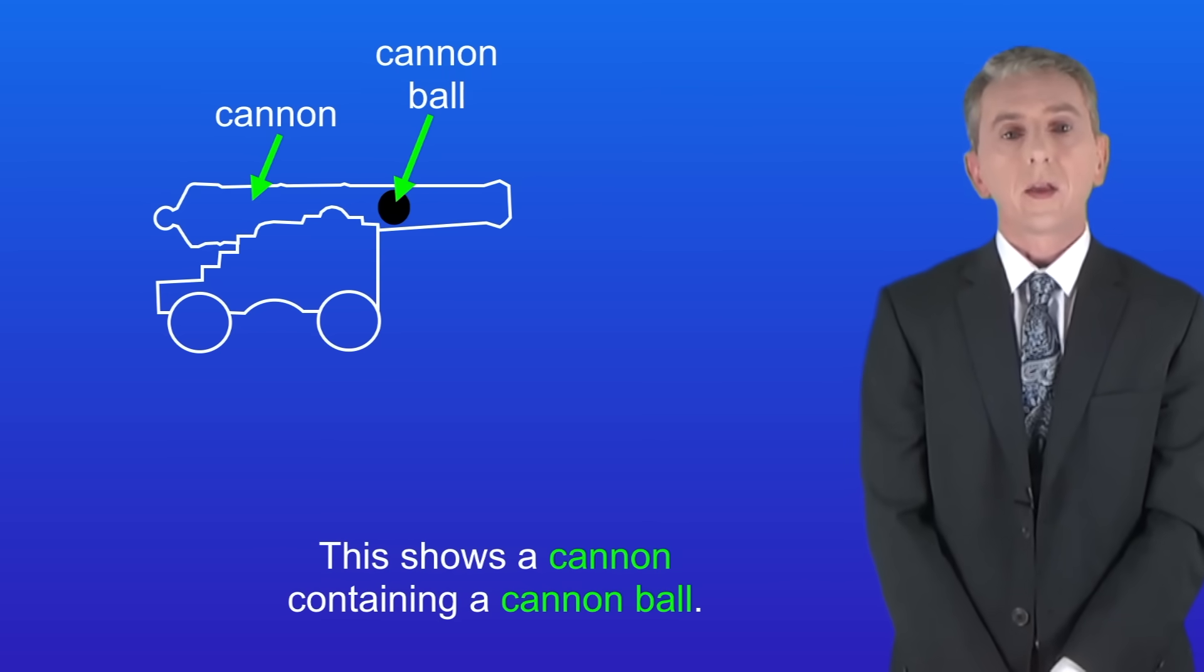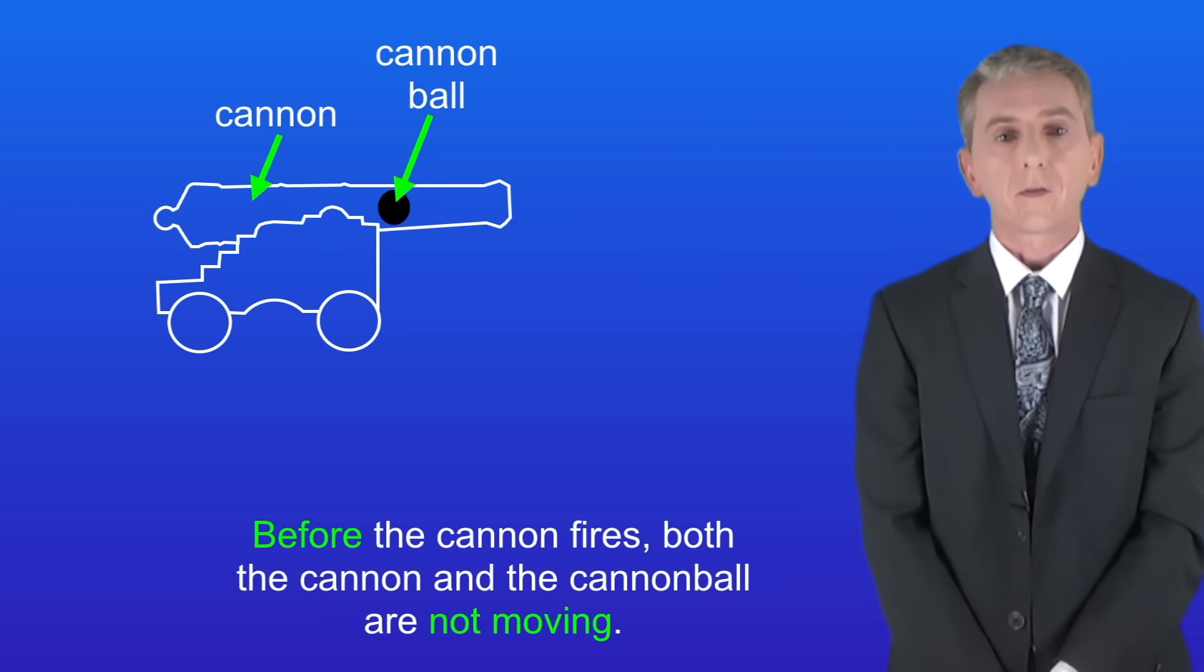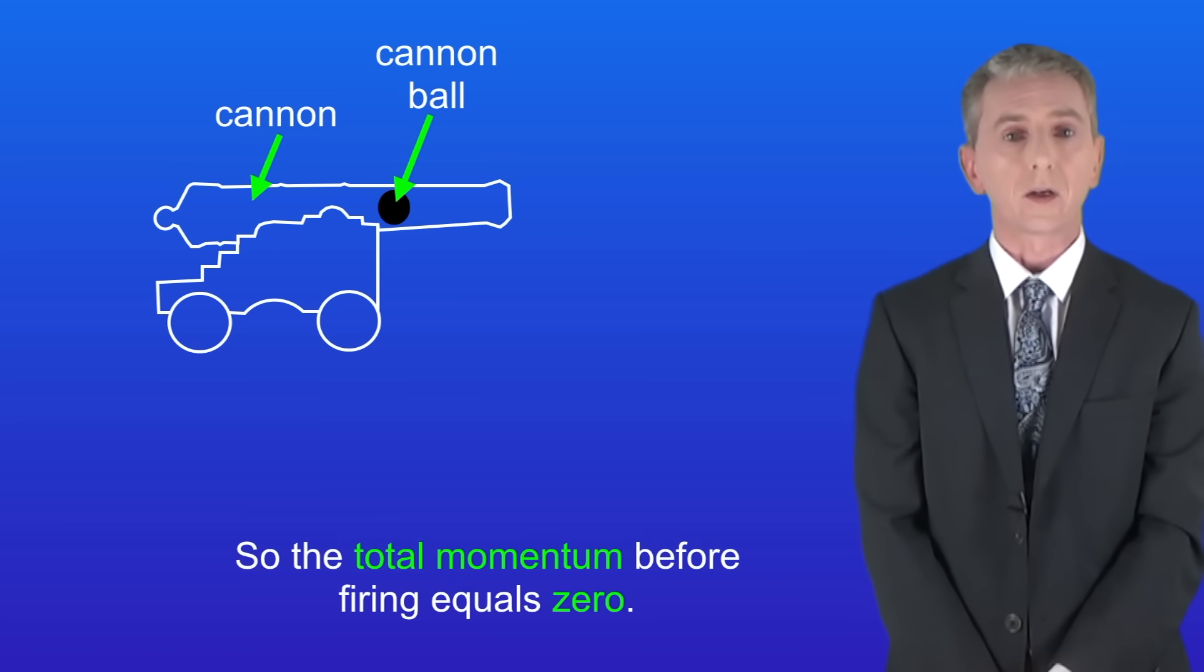Here's another example. This shows a cannon containing a cannonball. Before the cannon fires both the cannon and the cannonball are not moving. So the total momentum before firing equals zero.